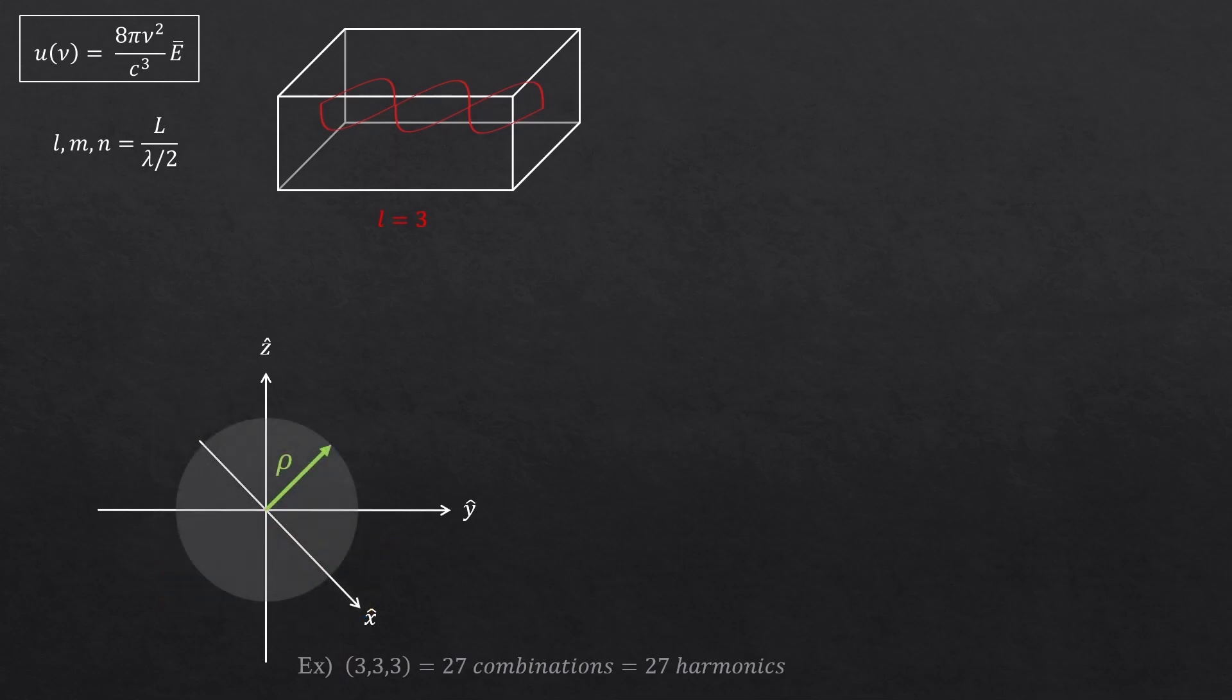And physicists prefer using spherical coordinates. So let's just simplify this by introducing radial parameter, rho. So we can rewrite like this. Then the total number of harmonics could be the volume of the sphere.